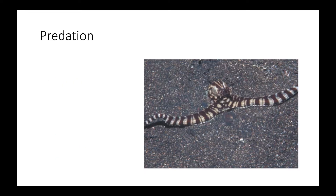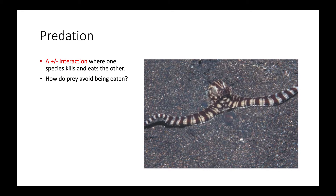Moving on to predation. Predation is a positive-minus interaction, meaning one species benefits while the other is negatively affected. In predation, one species will kill and eat the other.